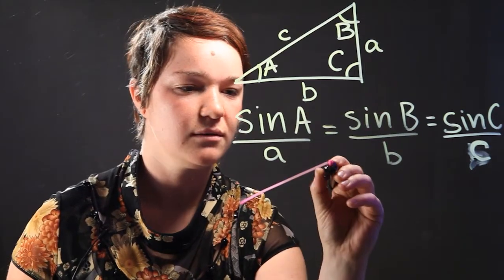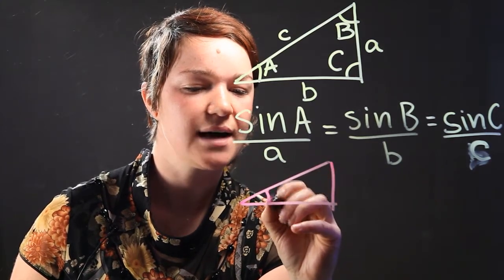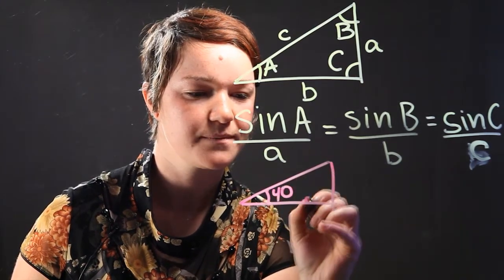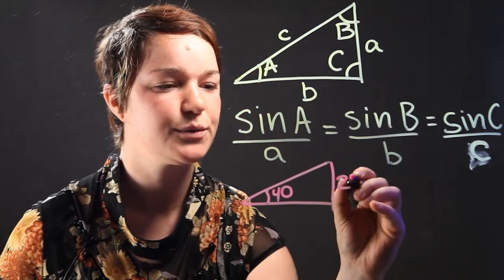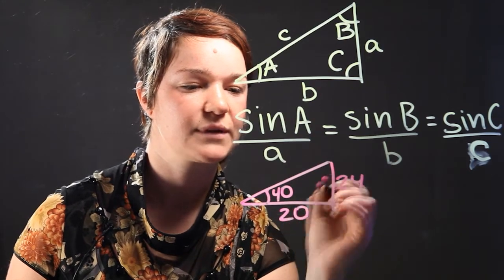Let's say that you're given an angle and one side, or one angle is 40, and then you know the two sides are 24 and 20, for example.